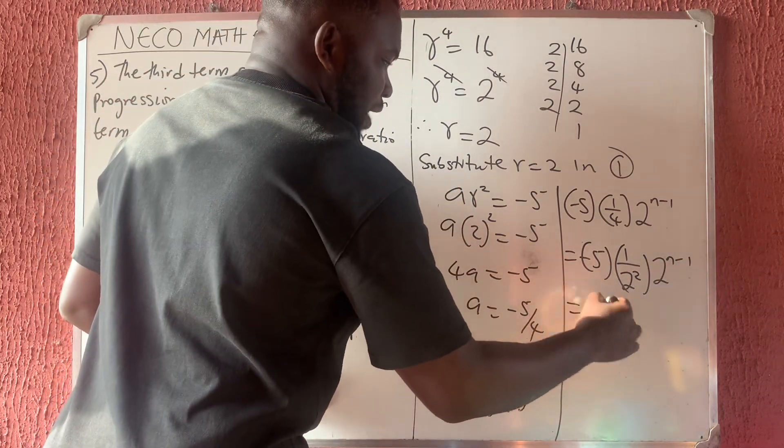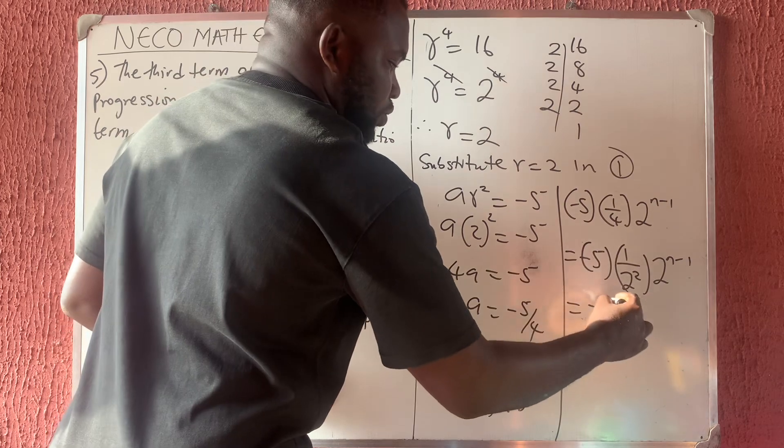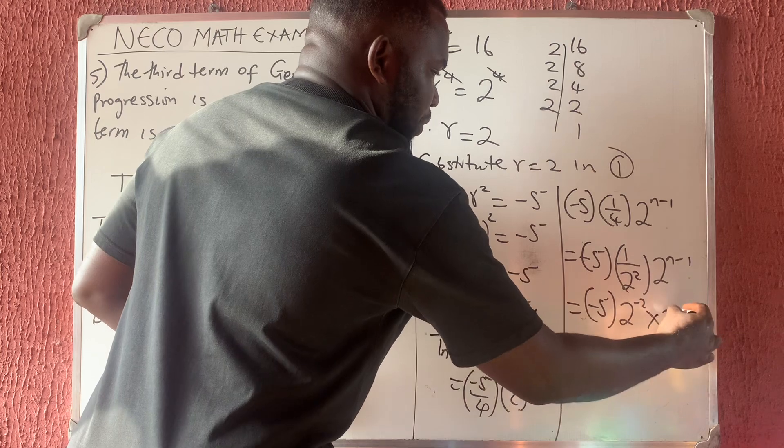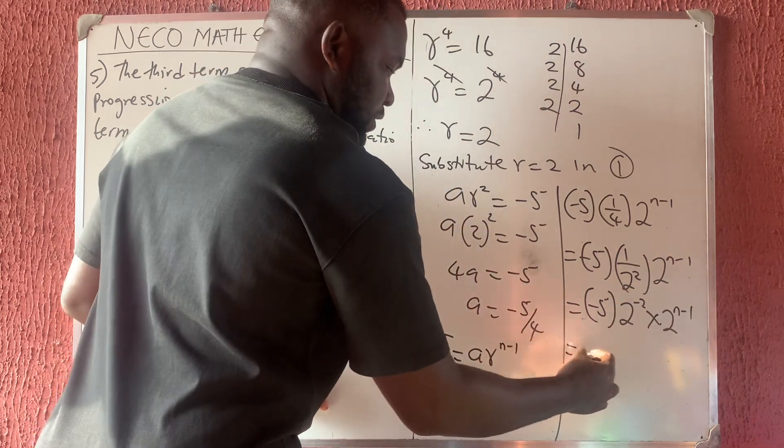So I'm having minus 5. Now, if this one wants to come up, I'm going to have a bracket of 2 raised to the power of minus 2, then times 2 raised to the power of N minus 1. So this is now what?